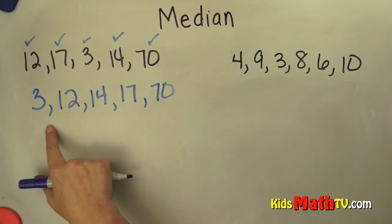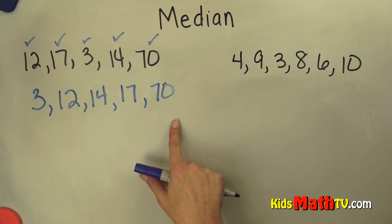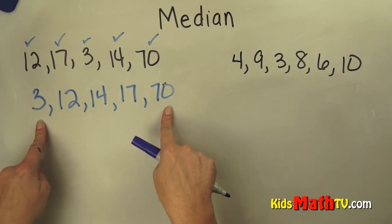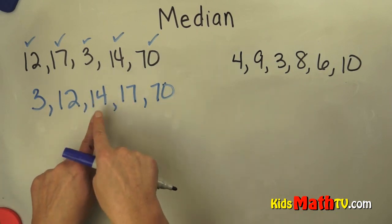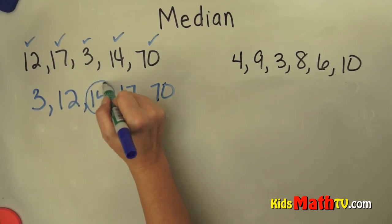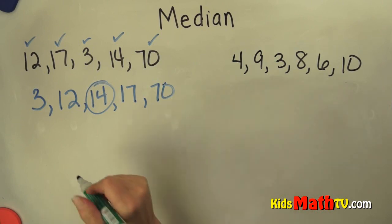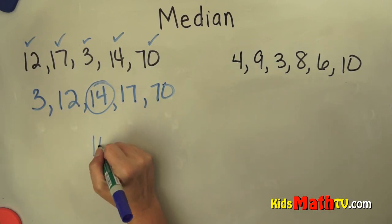So now my numbers are ordered from least to greatest, and I simply want to find the number that's in the middle. I start with my fingers on the outside and keep jumping until I find the number that is in the middle. So the median of this set of numbers is 14.